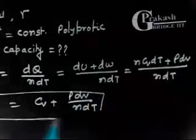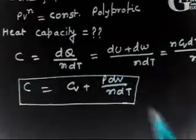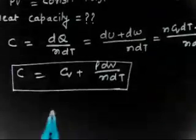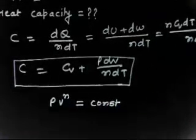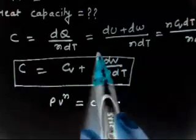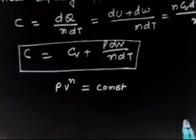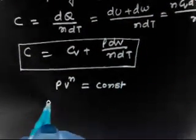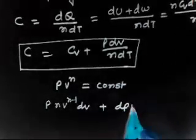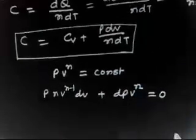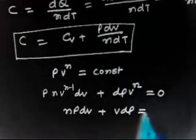Now I have to calculate the term p·dV divided by n·dT. For that, we use the equation PV^n equals constant. We differentiate this: n·p·V^(n-1)·dV plus dp·V^n equals zero, which simplifies to n·p·dV plus V·dp equals zero.